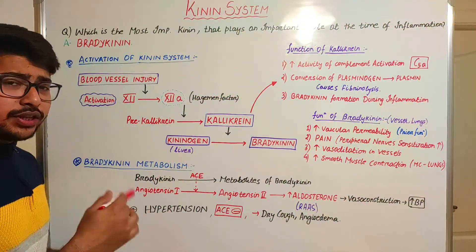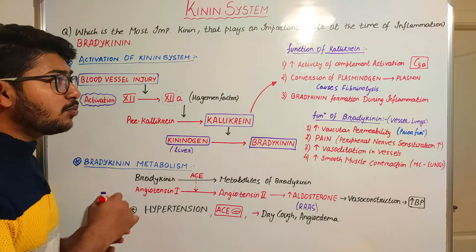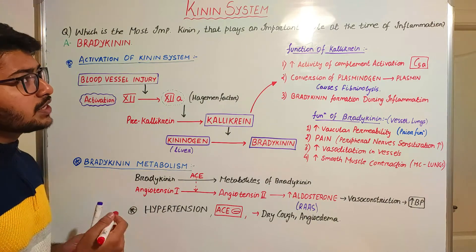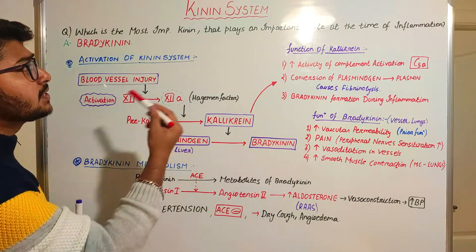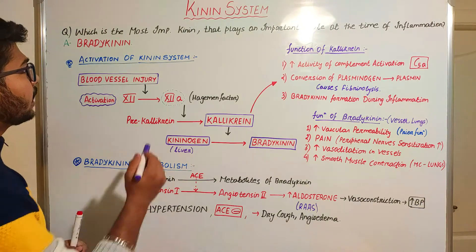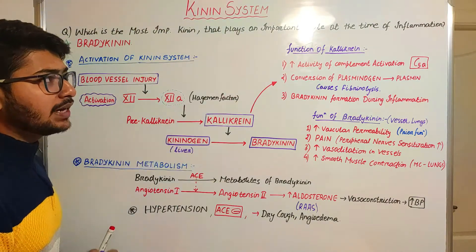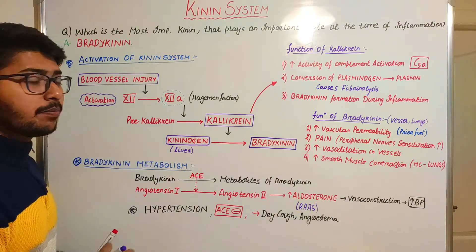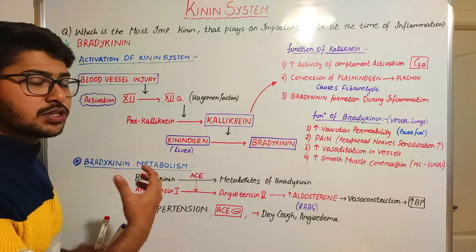During the process of inflammation there are certain kinds of mediators that are formed. Among the plasma mediators formed during inflammation is bradykinin, which comes under the kinin system activation. We are going to begin with a very important question: which is the most important kinin that plays an important role at the time of inflammation? It is bradykinin — we will read about how it is formed and what its functions are during inflammation.